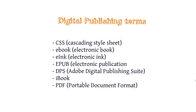E-book, short for electronic book, is a generic term used for many forms of digital publication. E-ink, short for electronic ink, is a display technology that relies on reflected ambient light rather than backlight technology to display content. E-pub is short for electronic publication — it's a form of e-book coded in HTML and CSS.